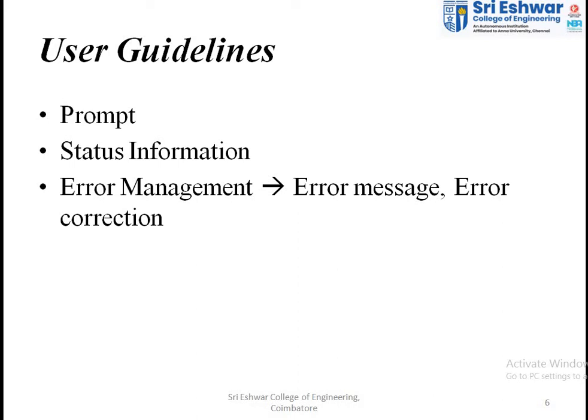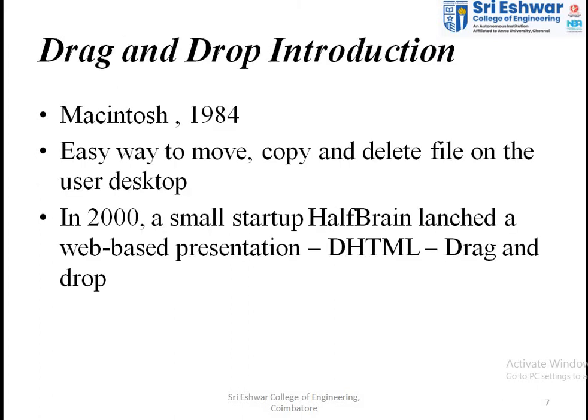To summarize the three user guidelines: the first is prompt, a small dialogue box displayed on the screen that guides the user about operations. The second is status information, which shows which stage or status the user is currently at. The third is error management, which displays error messages relevant to the user's operations.